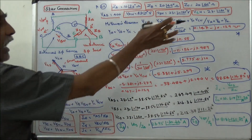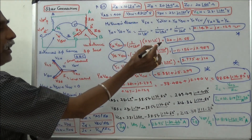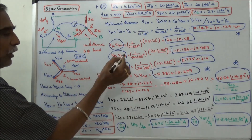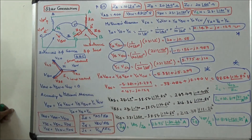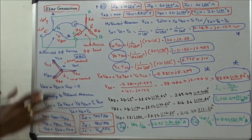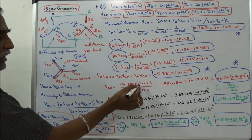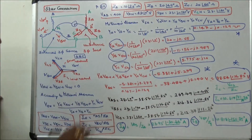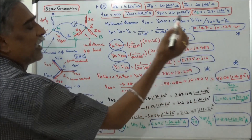Next we calculate the numerator terms: YA times VAN equals 20 minus J11.55, YB times VBN equals minus 11.156 minus J2.989, and YC times VCN equals 5.775 plus J10. Therefore VSN equals (minus 5.381 plus J5.279) divided by (0.147 minus J0.129), which equals 38.54 angle 176.82 degrees volts.